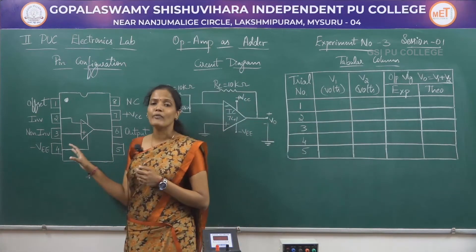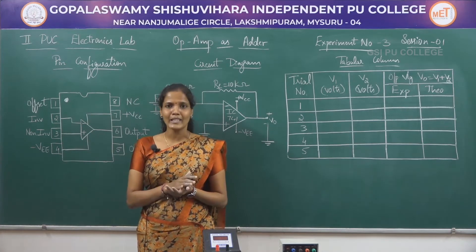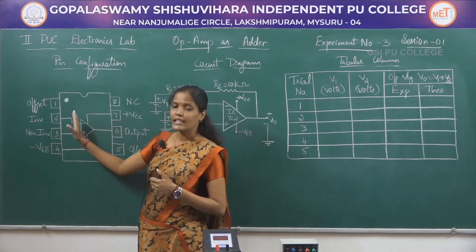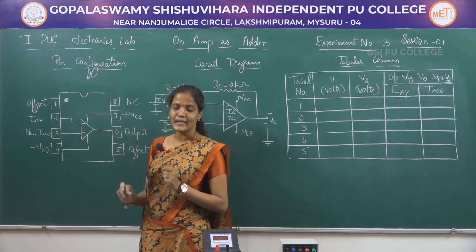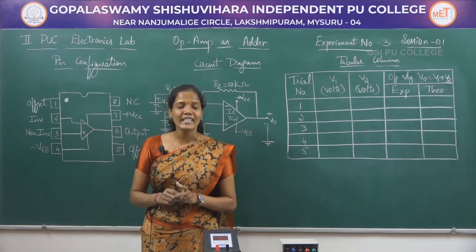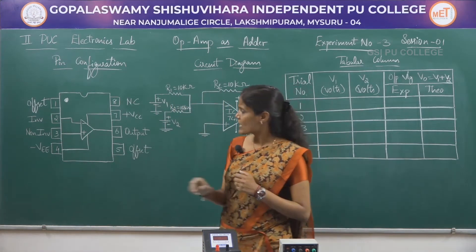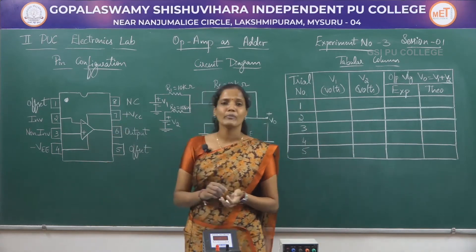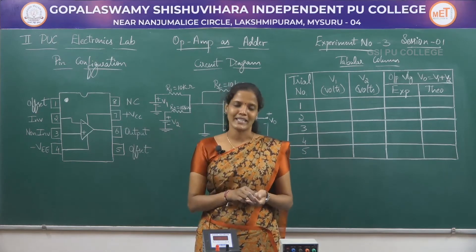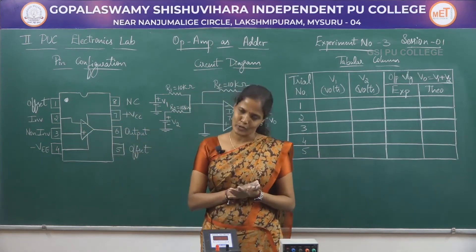Here is the pin diagram of the op-amp 741 IC. As usual it has 8 pins — 4 pins to the left of the notch and 4 pins to the right of the notch. Pin number 2 and pin number 3 are the input pins. Pin number 2 is the inverting input terminal, pin number 3 is the non-inverting input terminal, and pin number 6 is the output pin. Pins 7 and 4 connect the power supplies, and pins 8, 1, and 5 are left open.